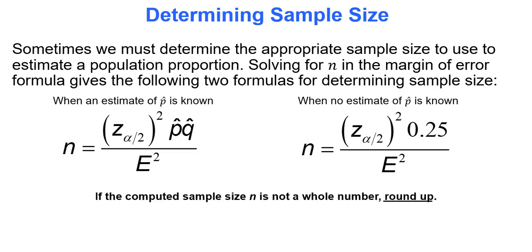There's one more thing we're going to do here and that's determining sample size. Sometimes you need to make sure you determine the correct sample size to use to estimate a population proportion. Because you can't just go out and randomly pick a certain number of people. If there's certain things or requirements that must be met by your boss or by the company that's contracted you out to do these calculations, you need to make sure you use the appropriate sample size to meet those requirements. Solving for n in the margin of error formula gives the following two formulas for determining sample size. The desired sample size will be the critical value squared times p-hat times q-hat over the error bound squared, and that's when you have an estimate of p-hat. If you don't have an estimate of p-hat, you still square the critical value, but you then multiply it by 0.25. The reason why is if you don't know anything about p-hat, which means you don't know anything about q-hat, what's 0.5 times 0.5? It's 0.25. That's where that comes from. And then you still divide by the error bound. If the computed sample size is not a whole number, you will round up. Because if you need to have a sample size of 40.2, 40 is not going to make the cut. You have to bump it up to 41.